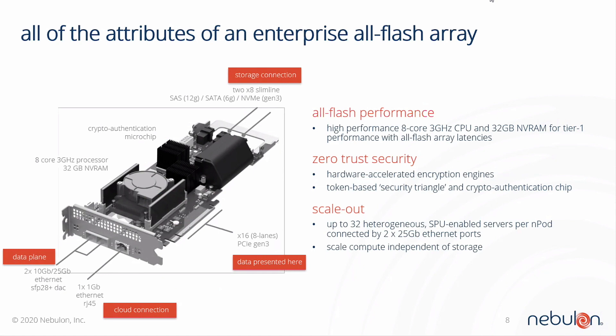There's also a crypto-authentication ASIC from Microchip. That ASIC, along with the encryption engines, is used to build a zero-trust token-based security triangle between the SPU, the Nebulon cloud, and the administrator. That's a topic all in itself, and I'm not the expert on that, so I'm going to leave that one for Michael, one of my colleagues, to handle later in the presentation.